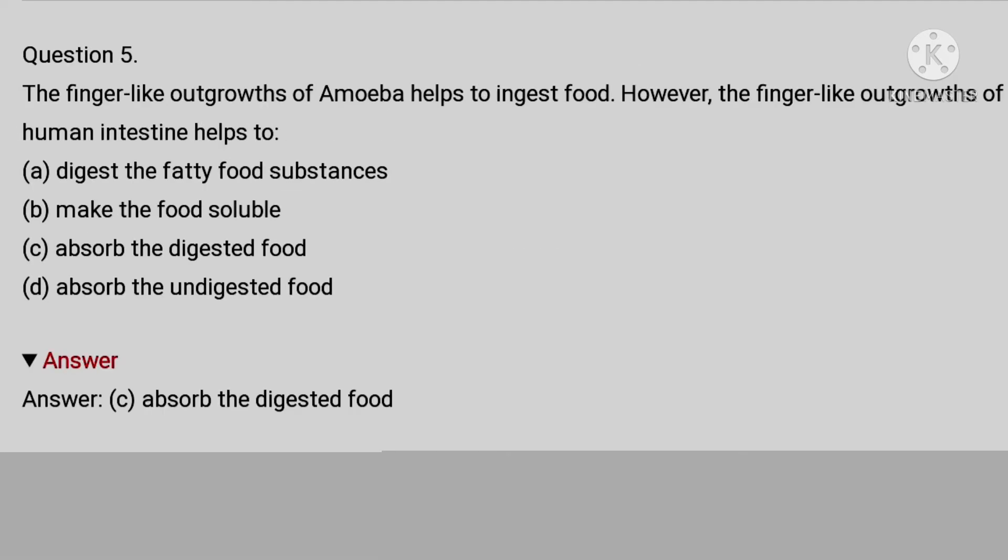The fifth question is: The finger-like outgrowth of amoeba helps to ingest food, however, the finger-like outgrowth of human intestine helps to digest the fatty food substance, make the food soluble, absorb the digested food, or absorb the undigested food. And the answer is absorb the digested food.